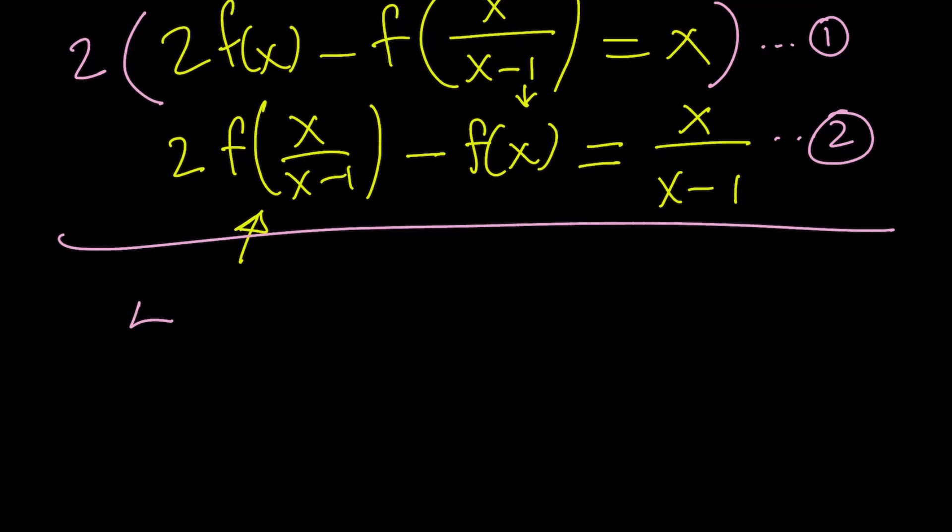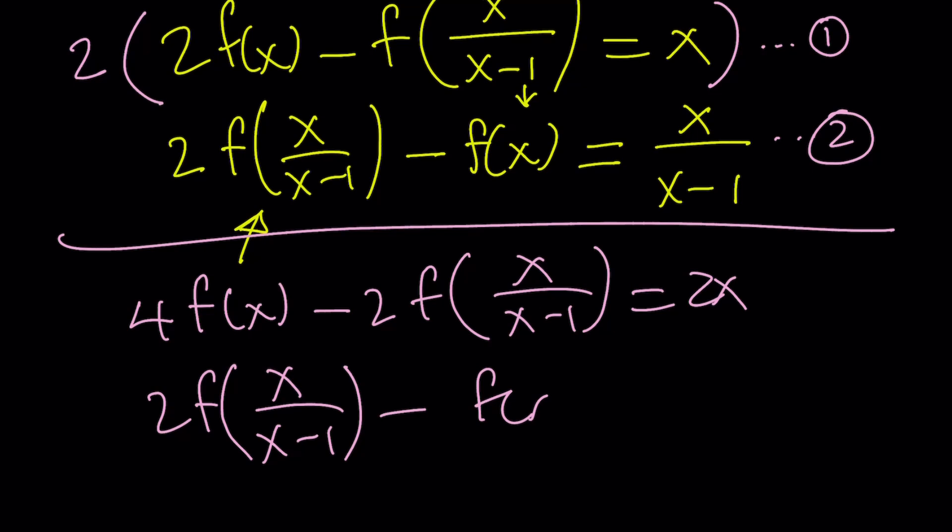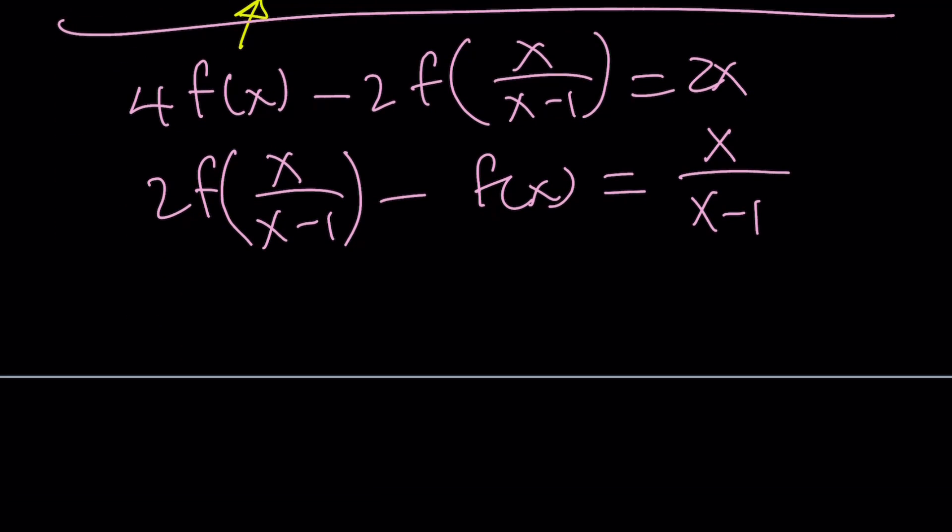That's going to give me 4 times f of x minus 2 times f of x over x minus 1 equals 2x. And the second equation is going to stay the same: 2 times f of x over x minus 1 minus f of x. Remember, this is the equation we obtained by replacing x with x over x minus 1. So the second equation is unchanged. Now we can go ahead and add these equations up.